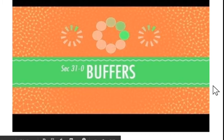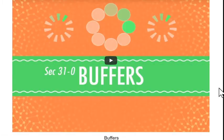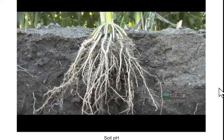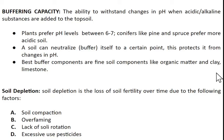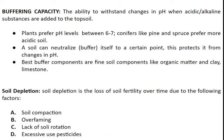We looked at buffers in class and what they do to the soil — how they help it counter changes in pH. So what is buffering capacity? It's the ability to withstand changes in pH when either an acidic or an alkaline substance is added to the topsoil.